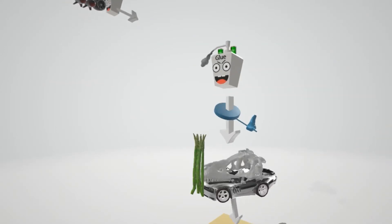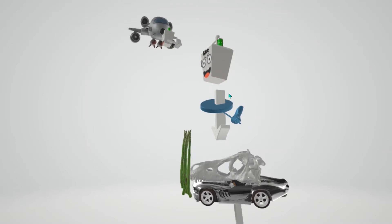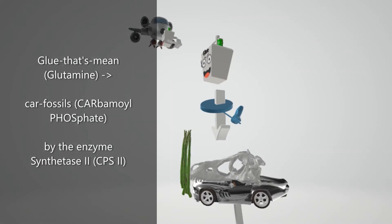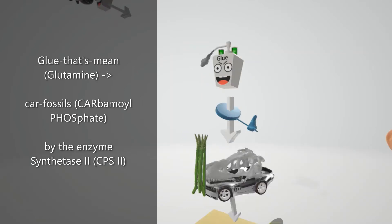The glue that's mean — glutamine — is converted into a fossil car: car for carbamoyl, fossil for phosphate — carbamoyl phosphate. This conversion is done by the enzyme represented by a sign for synthetase and a shoe on the side for two: carbamoyl phosphate synthetase II. That's how glutamine is converted to carbamoyl phosphate.